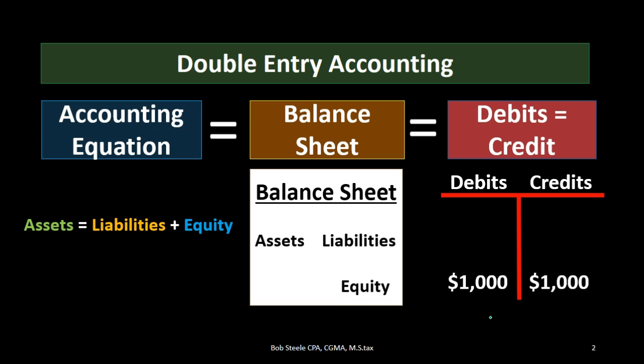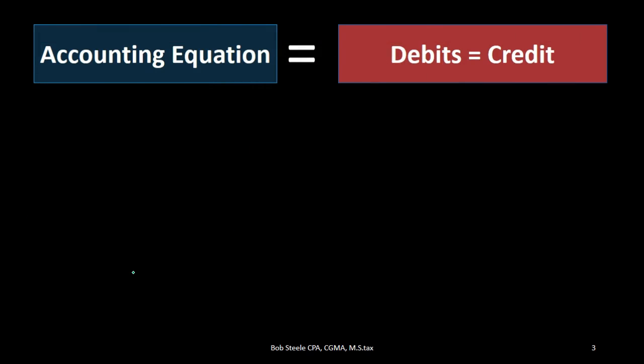When we learn accounting we usually start with the accounting equation, and by the time we start talking about debits and credits people say: I understand the double entry accounting system in terms of the equation — why do I need debits and credits? I would compare the accounting equation to a screwdriver: not too many parts, easy to understand.